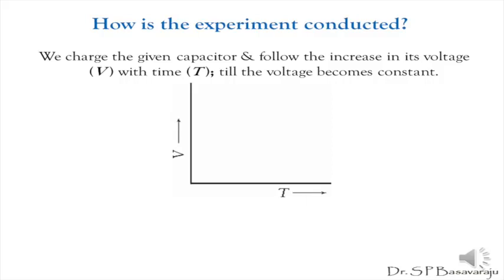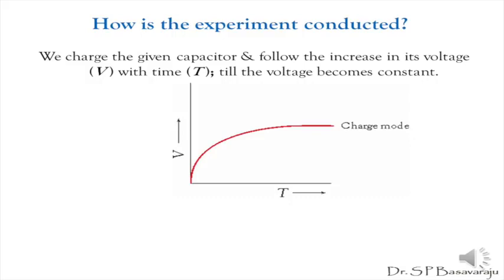In the experiment, by using a battery we electrically charge the capacitor via a resistor R and follow how the voltage V on the capacitor increases with time T. We follow this dependence till the voltage V becomes constant and plot a graph of V versus T. The curve obtained is called the charge mode curve. We then disconnect the battery and connect the capacitor's two plates via the same resistor R. A charge flow takes place between the two plates due to which the voltage in the capacitor decreases.